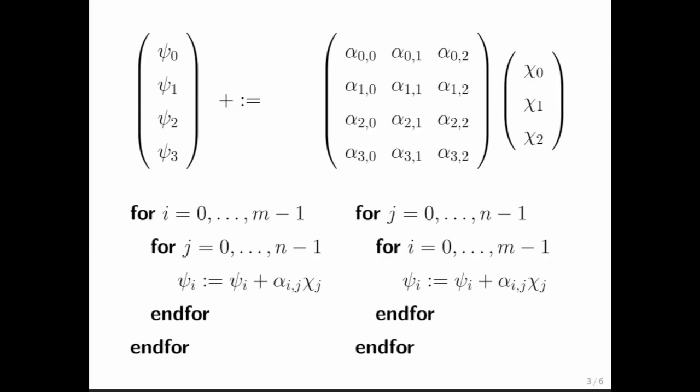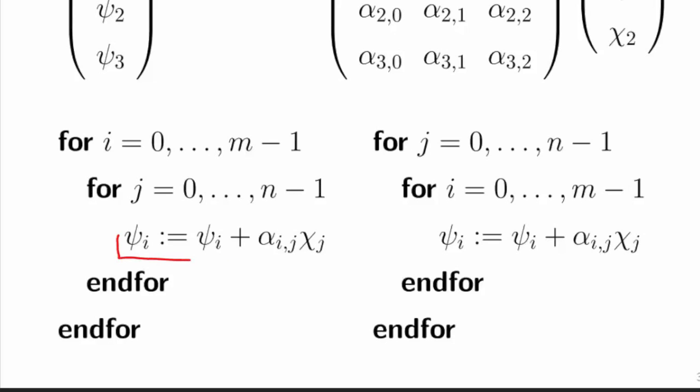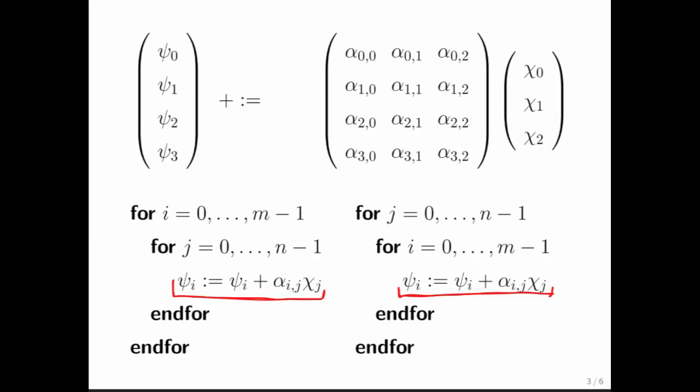Now, what do we notice? Well, we notice that the update that happens to elements of Y is identical. We notice that in both cases, we have a doubly nested loop.